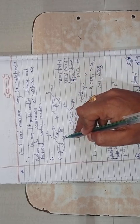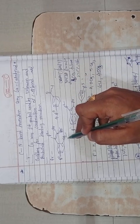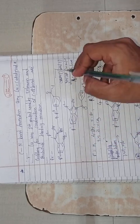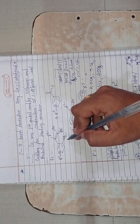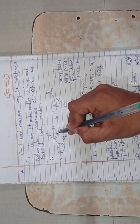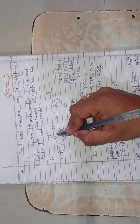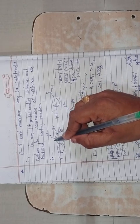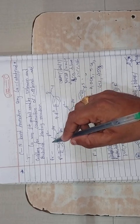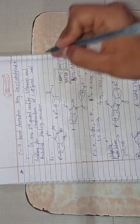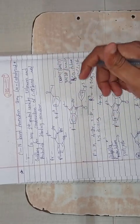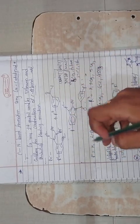Again in presence of base, another hydrogen on nitrogen is abstracted, forming a negative charge on nitrogen. That negative charge attacks the alkyl group, the pi bond forms a negative charge on the carbon atom, that negative charge abstracts H+, and you get formation of the product.